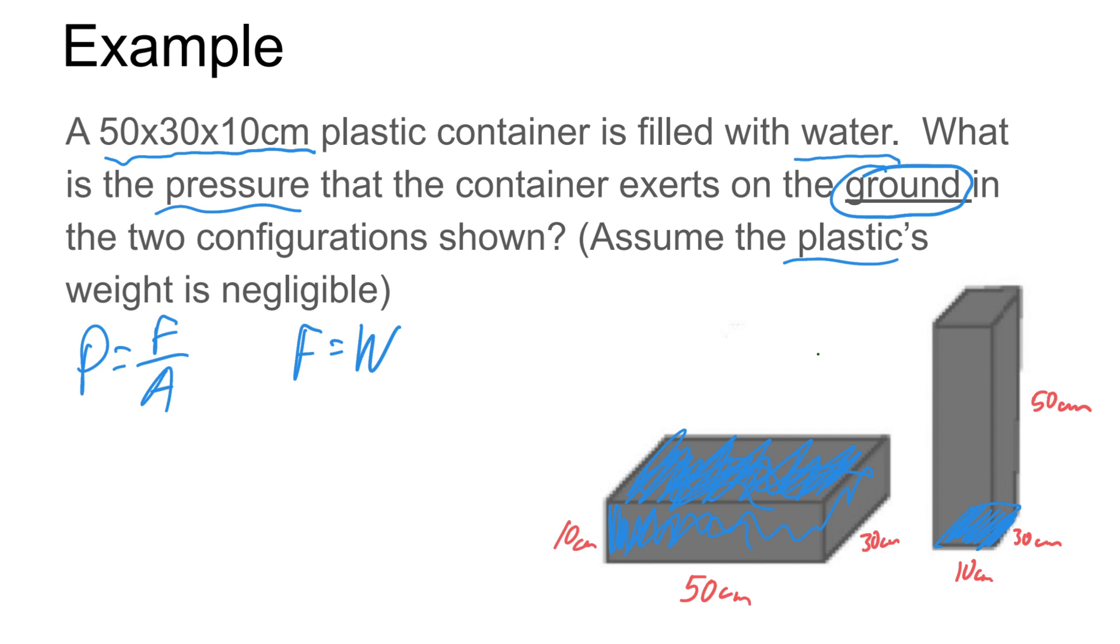Well we know the density of the water is equal to mass over volume. And so our mass, let's get the mass first and we can find the weight, because the weight is mass times little g.